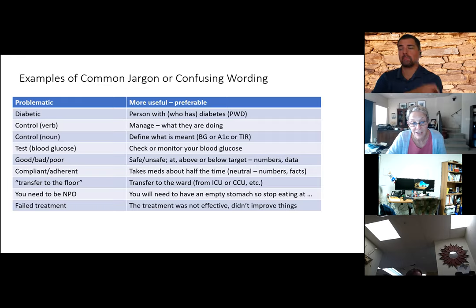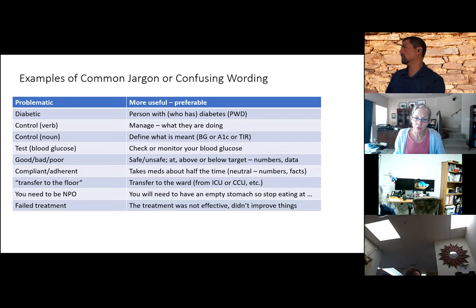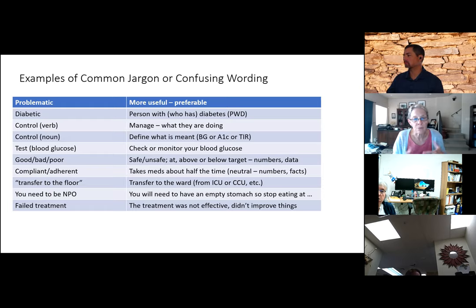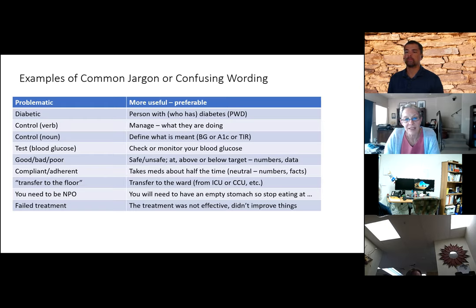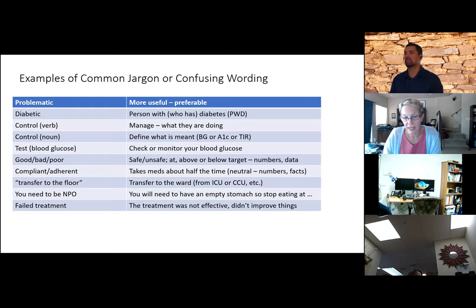Don't tell patients they're going to be 'transferred to the floor' — they think they'll be moved from the bed to the floor, as opposed to from a unit to a ward. Don't tell someone they need to be NPO — they don't know what that means. Say 'you need to have an empty stomach.' We need to be reminded not to use jargon around patients — it's scary, intimidating, and frustrating for them. And 'failed treatment' — whether blood pressure, infection, or diabetes — instead say 'the treatment wasn't effective' or 'it didn't work in you,' because not everybody responds the same to the same diet, exercise, or medication. There's therapeutic heterogeneity.